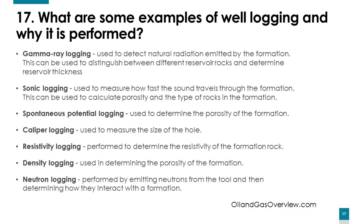What are some examples of well logging and why is it performed? Gamma-ray logging is used to detect natural radiation emitted by the formation, which can be used to distinguish between different reservoir rocks and determine reservoir thickness. Sonic logging measures how fast sound travels through the formation, which can be used to calculate porosity and the type of rocks. Spontaneous potential logging is used to determine the porosity of the formation. Caliper logging measures the size of the hole. Resistivity logging determines the resistivity of the formation rock. Density logging is used to determine porosity. Neutron logging is performed by emitting neutrons from the tool and determining how they interact with the formation.